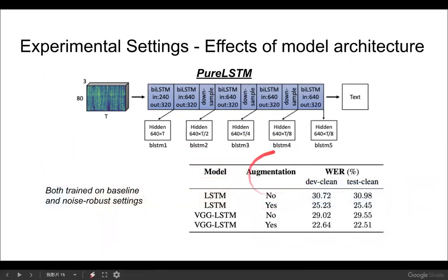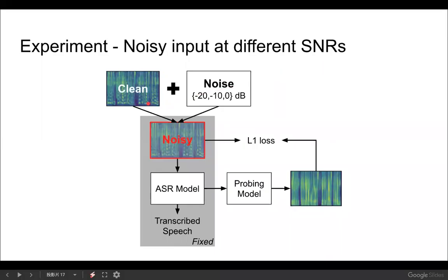Here are the word error rates of our models under all different experimental settings. We found that VGG outperforms LSTM on average, and augmentation helps. In all probing experiments, apart from clean speech, we also feed noisy speech at different signal-to-noise ratios. Whatever input ASR receives, we ask the probing models to reconstruct it. So if a probing model fails to reconstruct noise in the input speech, we can infer that the ASR model is performing denoising.